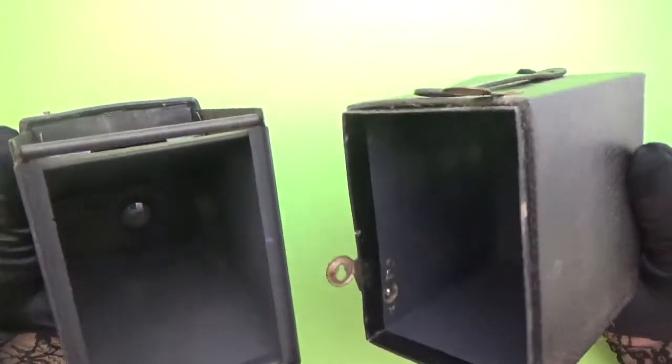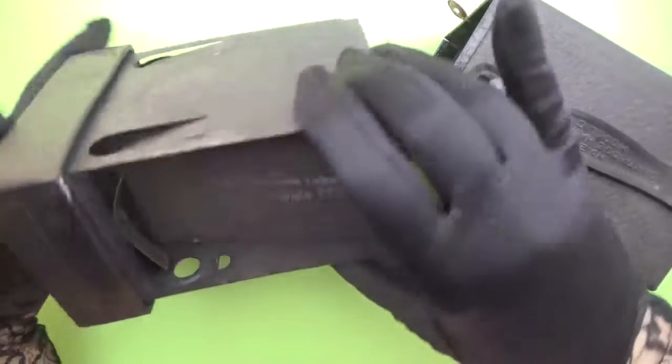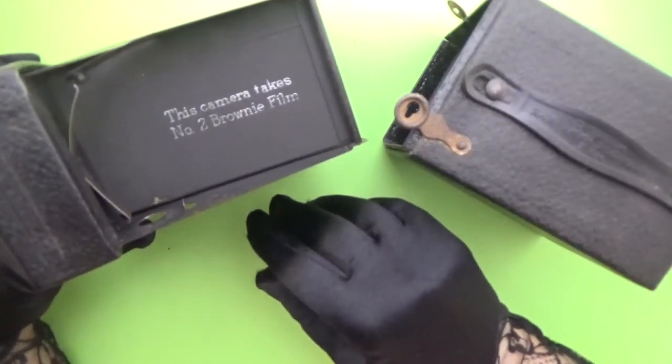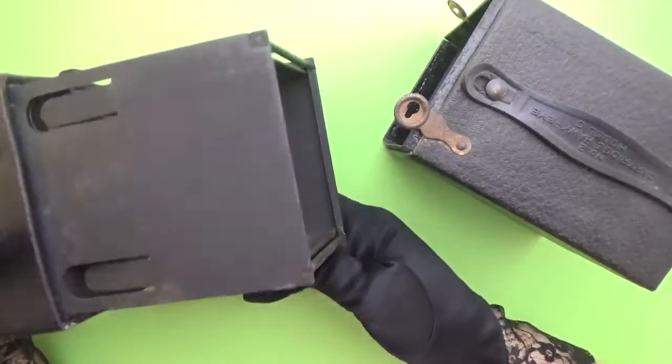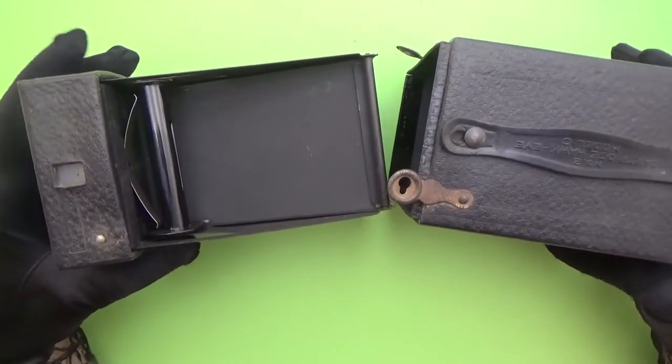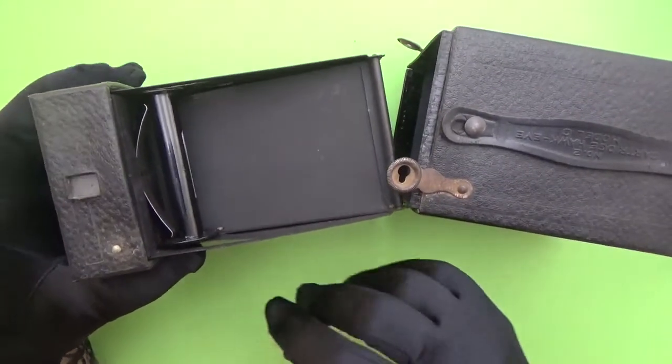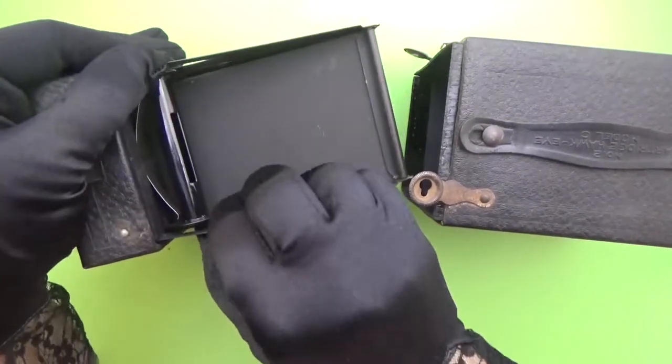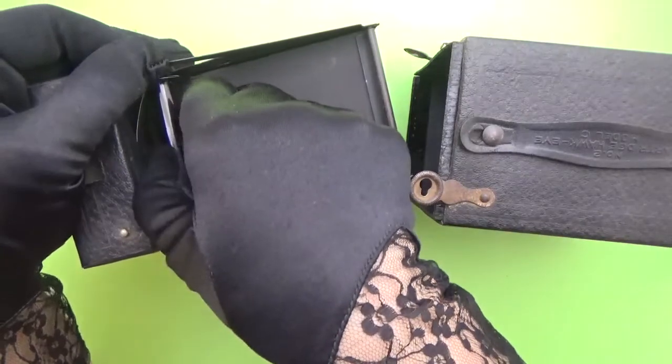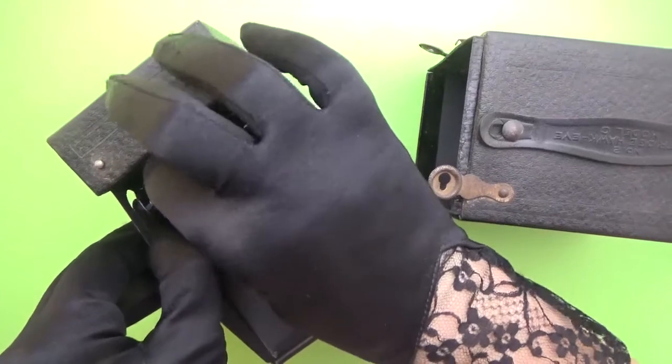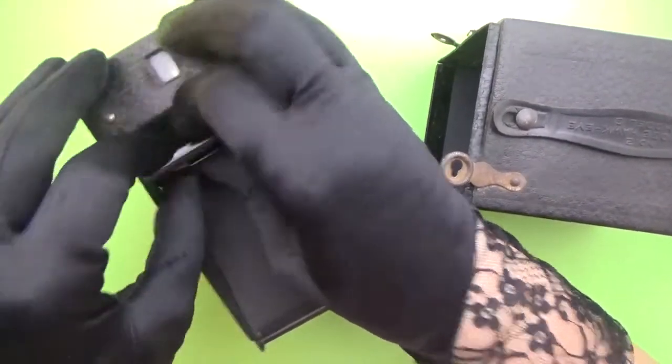It is a very simple camera and there is usually a note that it should use Number Two Brownie film, which was the film of Kodak of the time. You will usually find an empty 120 spool on its top from a previous use. You will remove the empty spool like so.